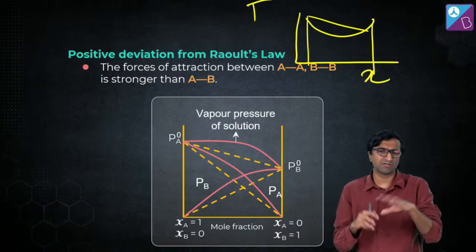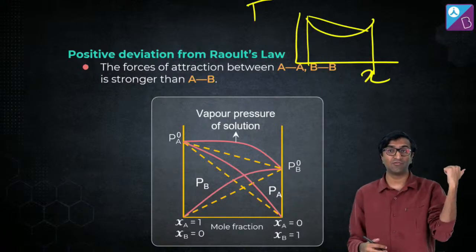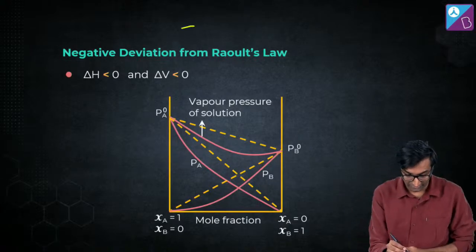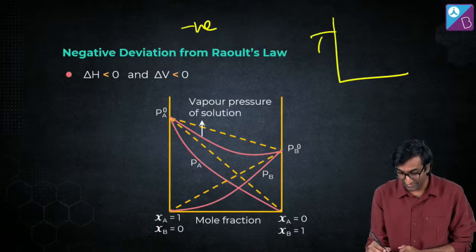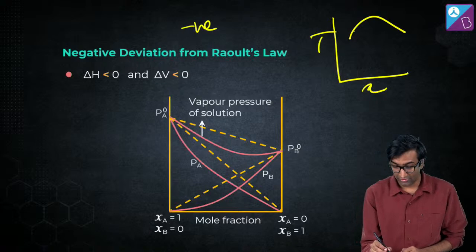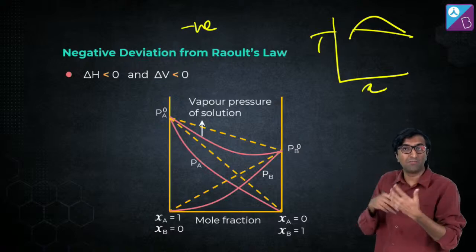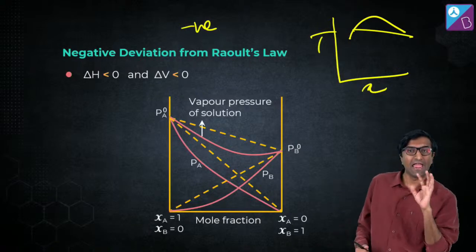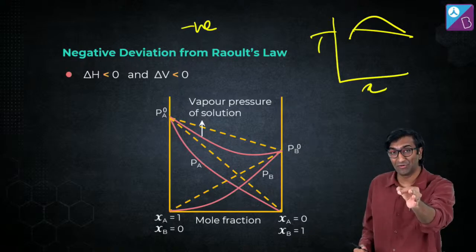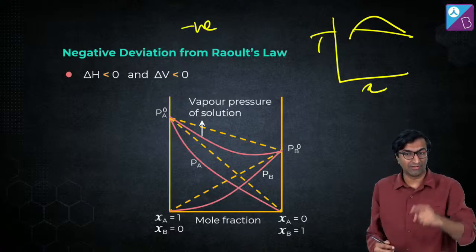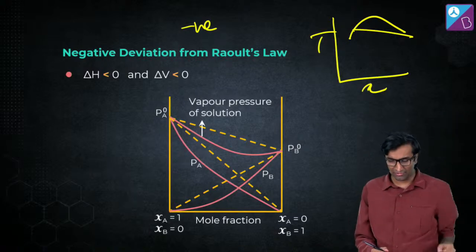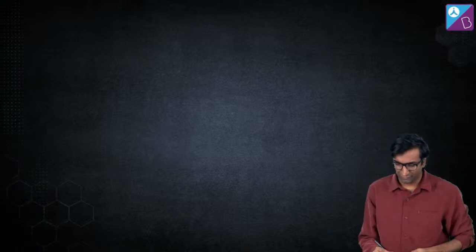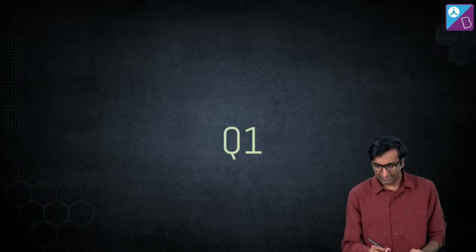If partial pressure is high, the temperature at which the liquid becomes vapor is lower — they're inversely related. For negative deviation, the T vs x graph curves upward, forming an azeotrope with a higher boiling point, because the vapor pressure is reduced. Boiling happens when vapor pressure equals atmospheric pressure — so lowering vapor pressure means more effort to boil, hence higher temperature. You're right on time for the questions now.